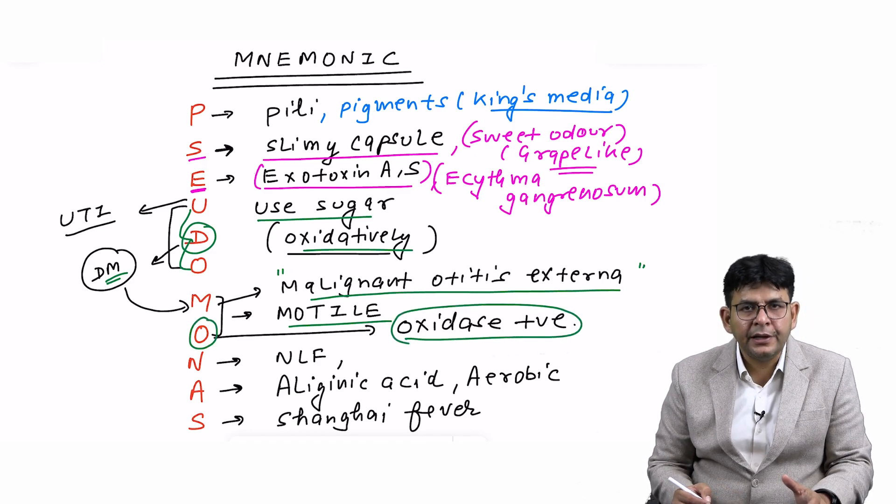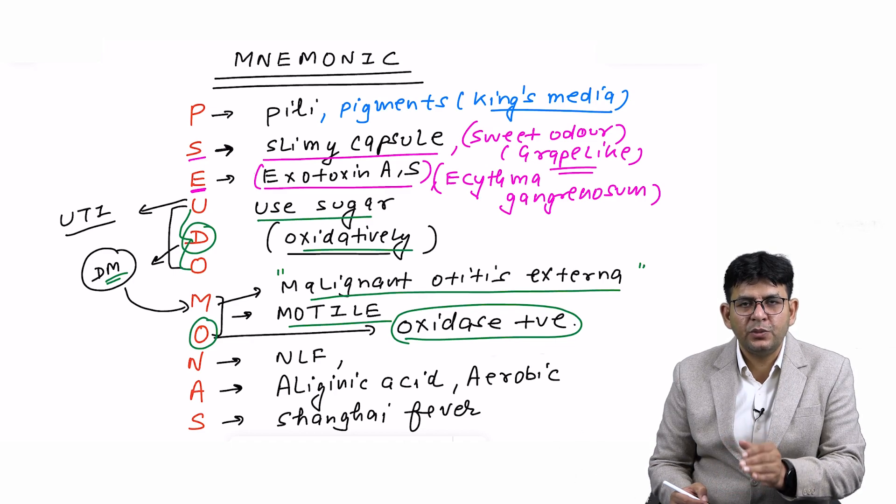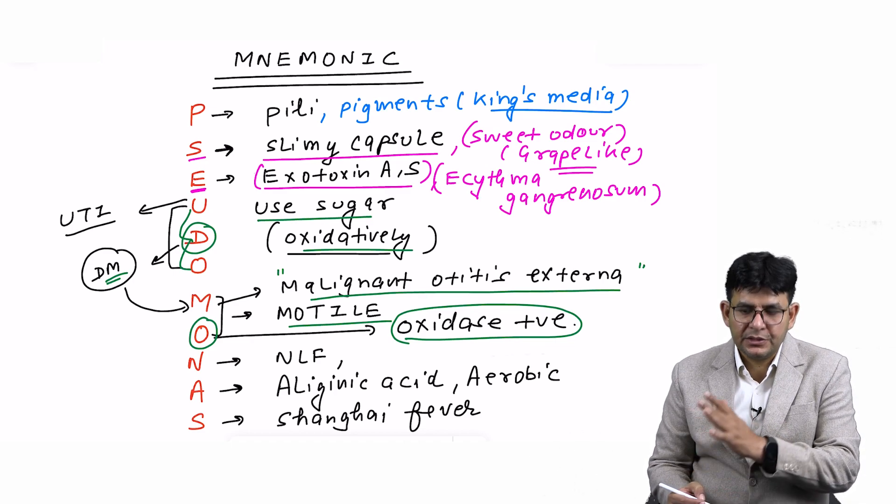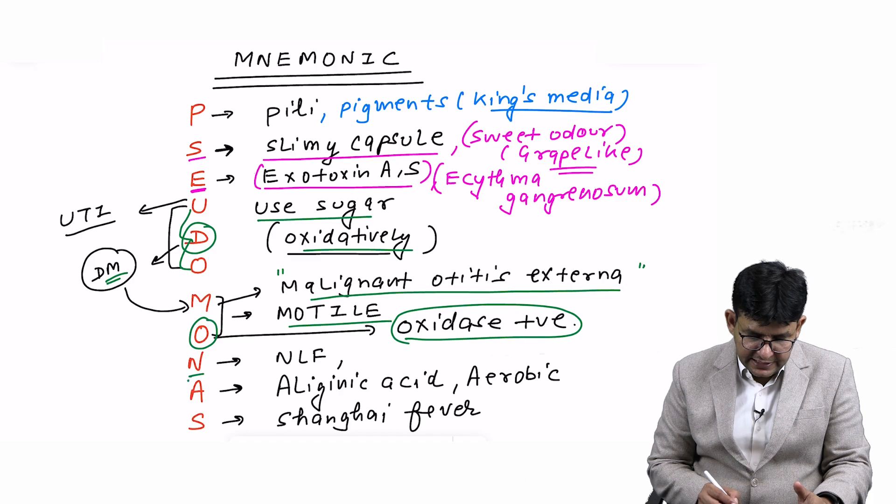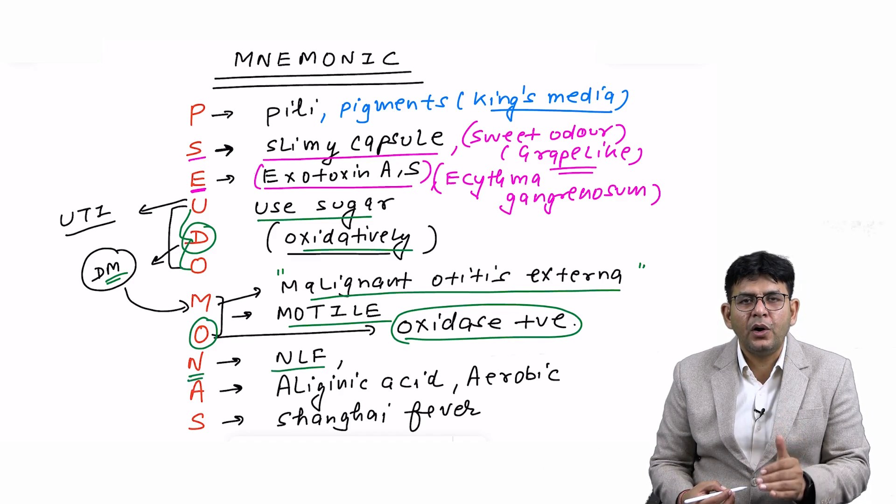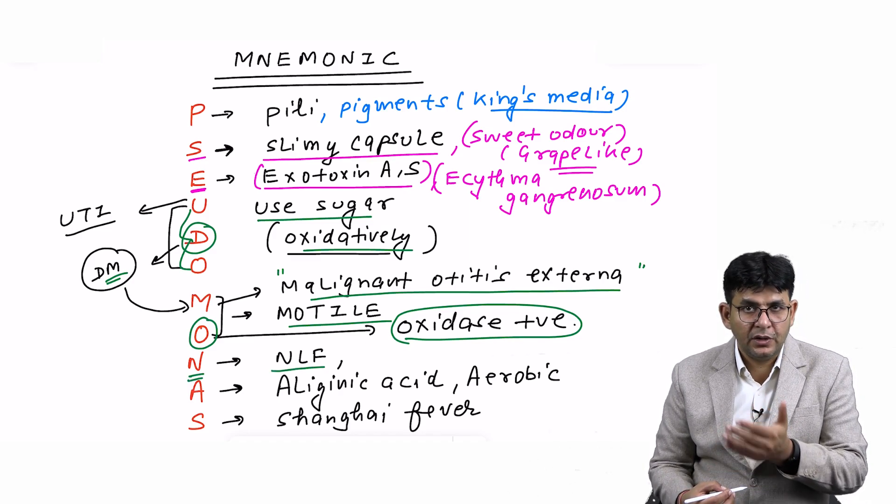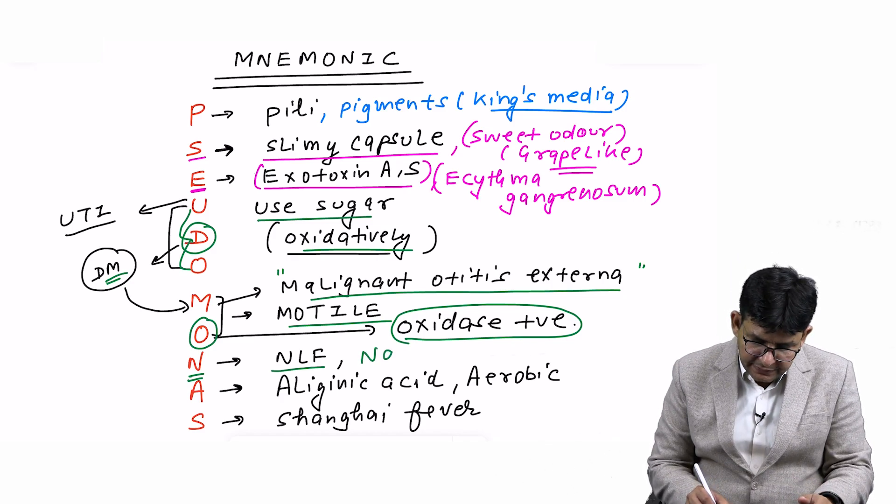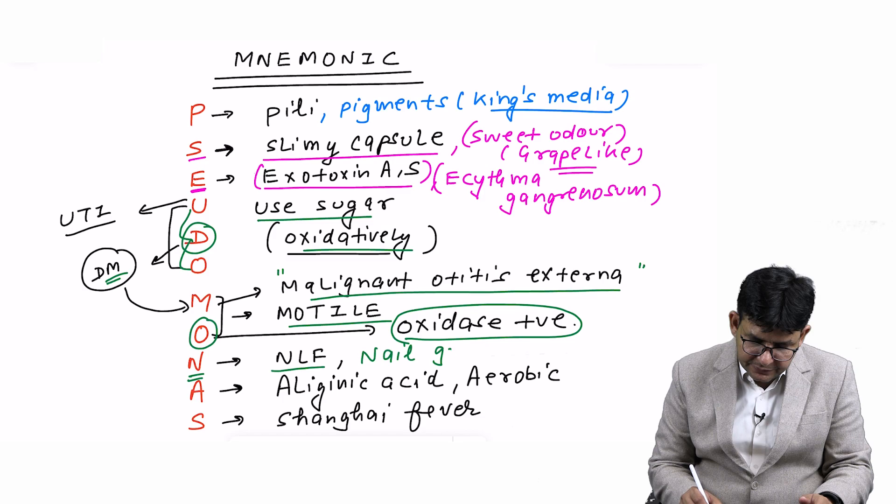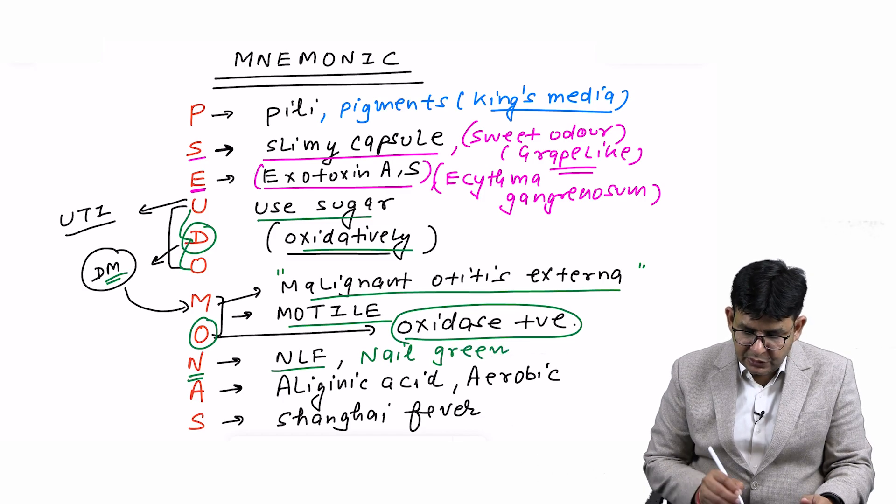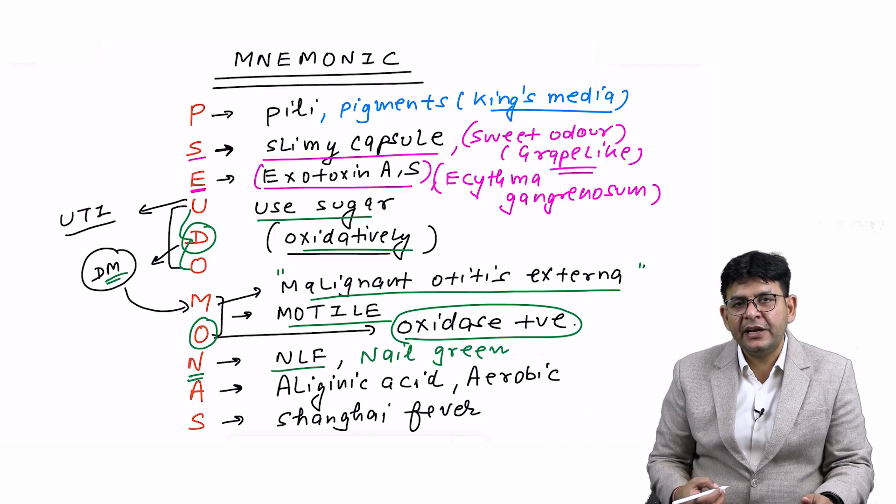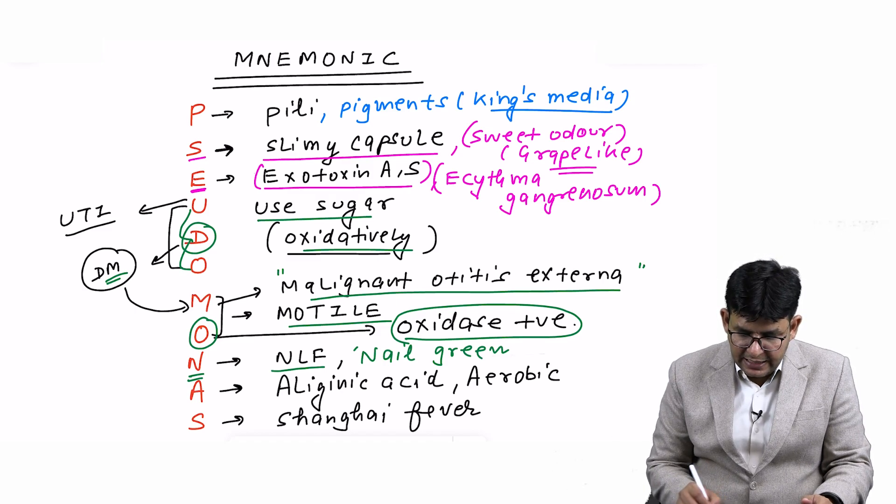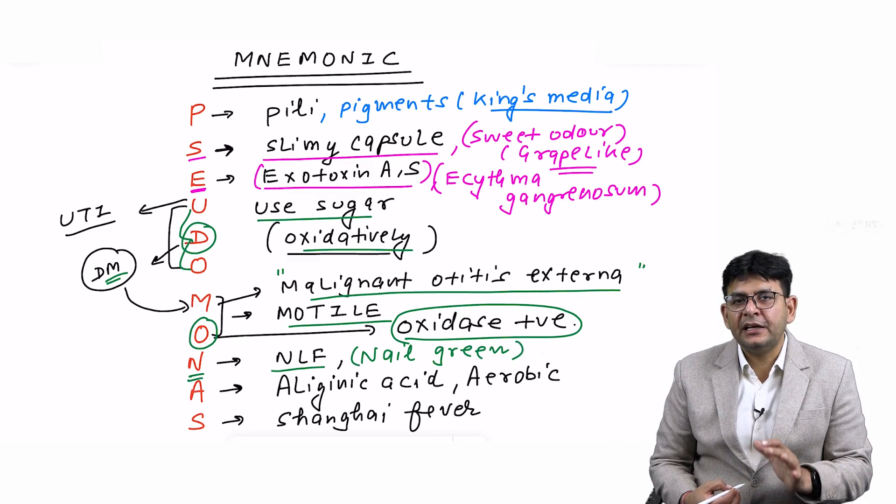O you can take up for a very important reaction: oxidase positive. It is oxidase positive. N is non-lactose fermenter. Along with that, you can remember it makes the nail green—green nail syndrome.